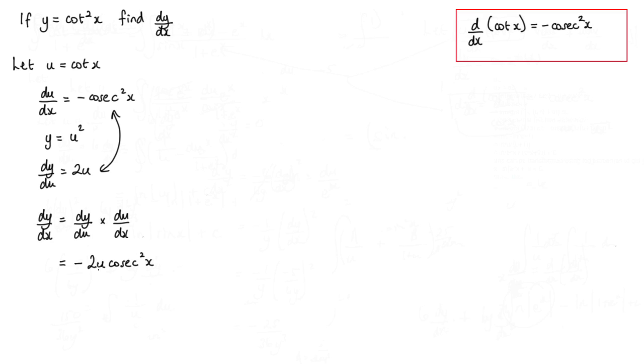So the last thing to do is to substitute back in for u. So we get negative 2 cot x cosec squared x.